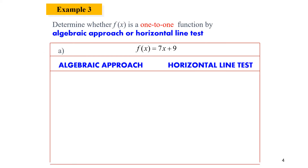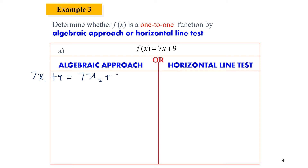So now we try to solve this question using the horizontal line test to determine whether the function is one-to-one. We will also use an algebraic approach. Let's try the algebraic approach first. To do so, we substitute x with x₁ on the left side of the equation and x with x₂ on the right side of the equation.